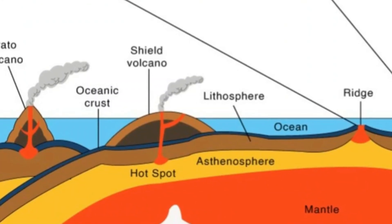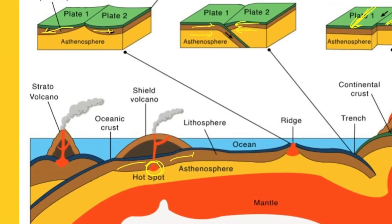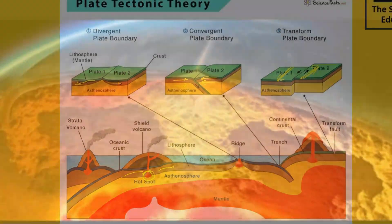Above the hot spot, the plates keep on moving, and their movement can be in two opposite directions: diverging. When they are moving towards each other, it is known as convergence. When they are moving sideways past each other, it is considered transform movement.